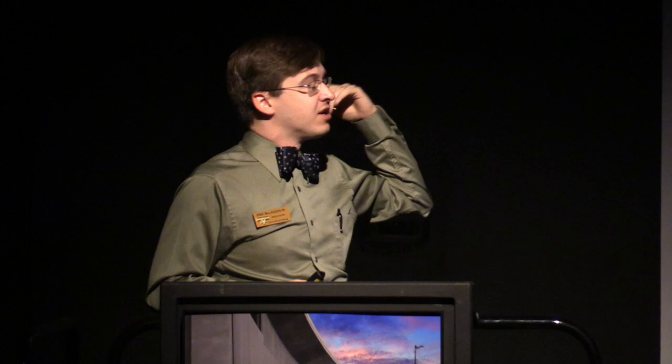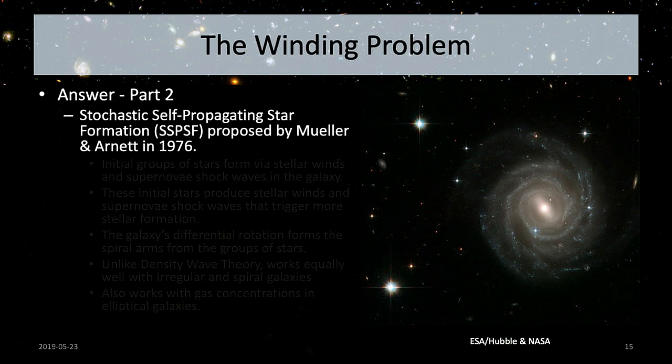Density wave theory works great for grand design spiral galaxies — ones with two nice spiral arms. But you don't always have just two arms, and there are cases called flocculent spiral galaxies where you lose a clear notion of arms but still have spiral structure. Density wave theory isn't quite enough to make that work, so there is a part two to the answer: stochastic self-propagating star formation, or SSPSF.